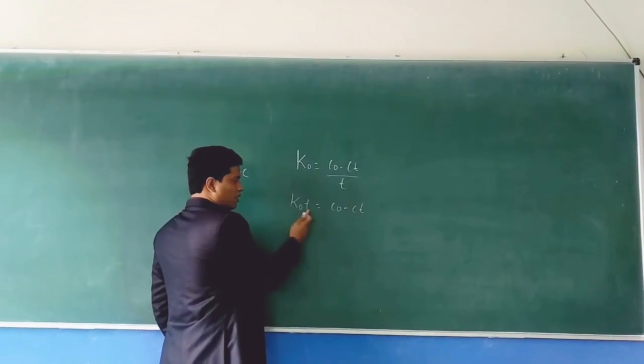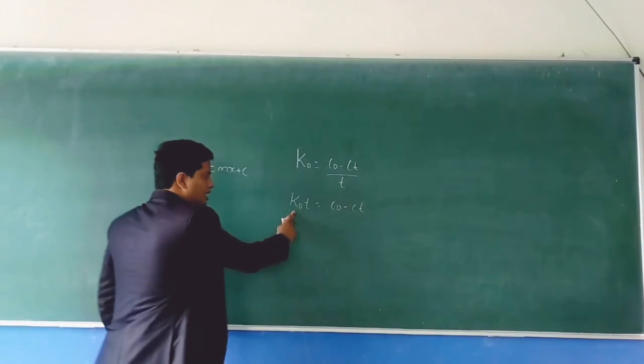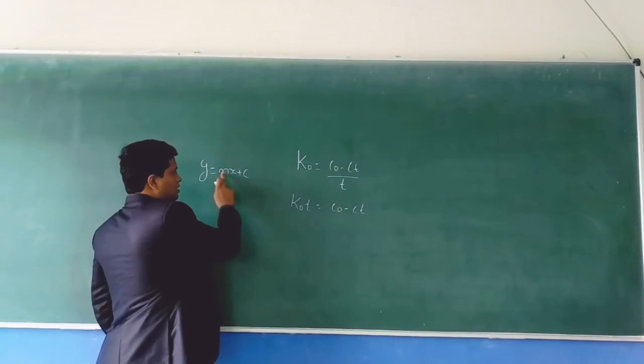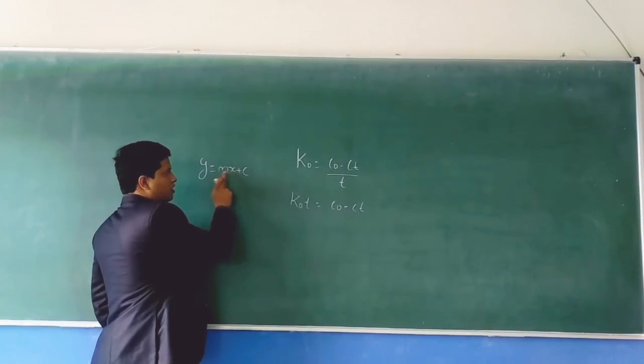Multiply time with the rate constant and you will get kt equals C naught minus Ct. This is the x-axis. Whatever is present beside the x-axis will be your slope, so we got the x-axis and slope.